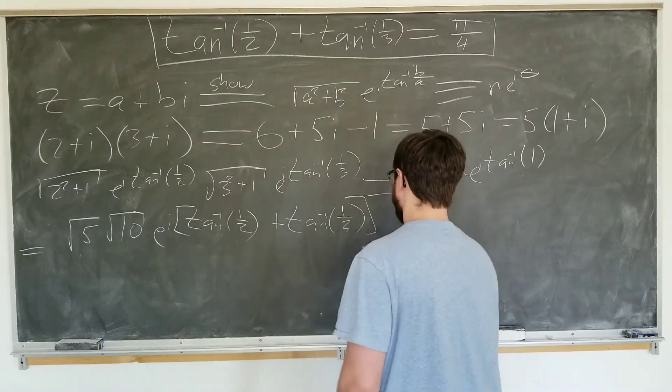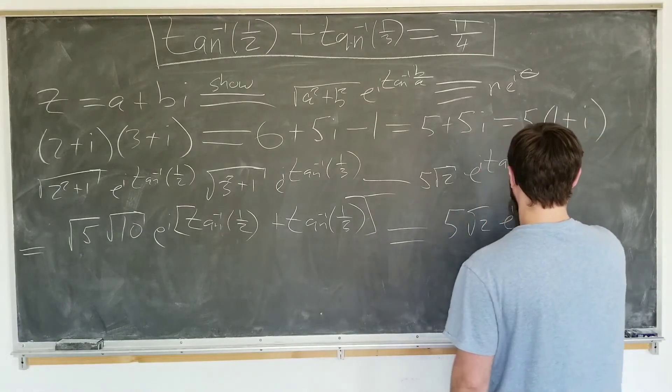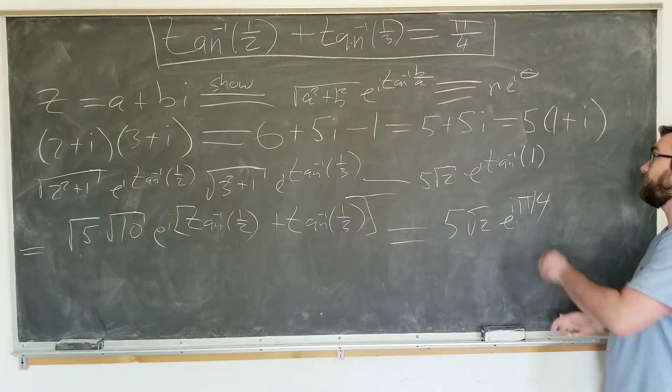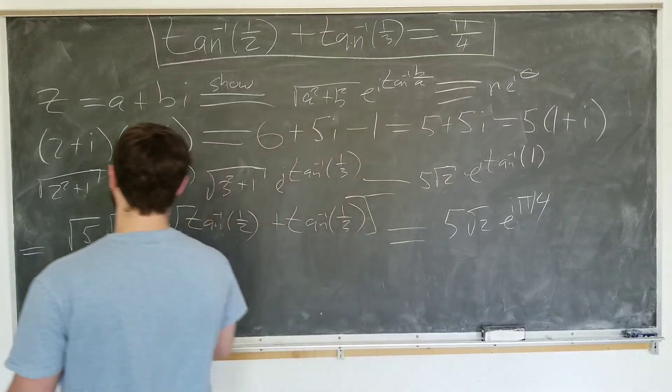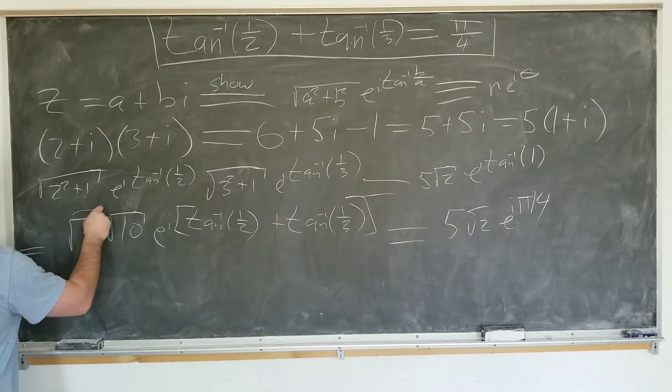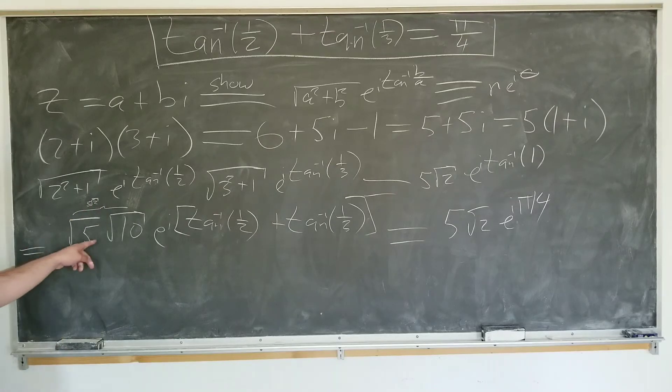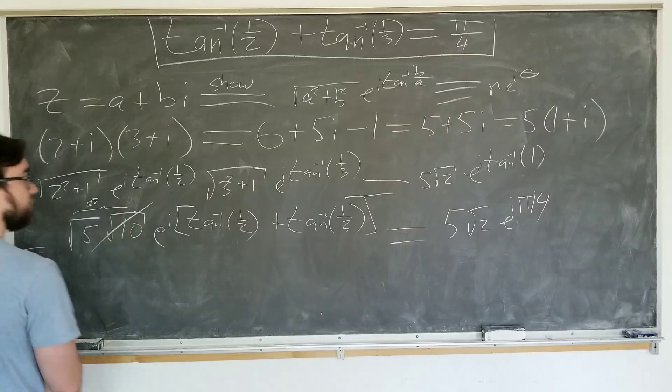on this side, 5 square root of 2, e to the i pi over 4, since the angle that has a tangent of 1 is indeed pi over 4. And these are the same thing, this is 5 square root of 2 as well, because you can take the 5 in there by squaring it, so they cancel.